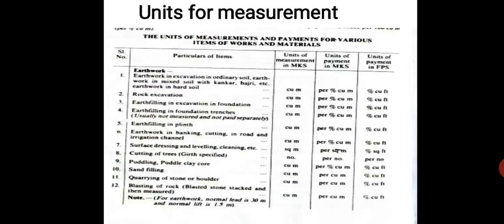Tree cutting is measured by number. Surface dressing and leveling is measured in square meters. Each type of work has its appropriate unit of measurement. These topics will be discussed in detail in later classes. The process of estimation and types of estimates will be covered.